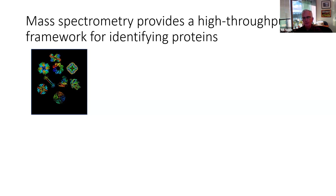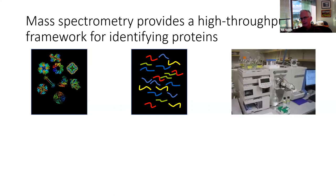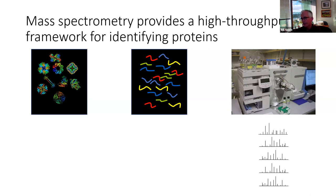Mass spectrometry is kind of like high-throughput sequencing. In genomics, high-throughput sequencing is a platform technology enabling many different kinds of experiments, and mass spectrometry does that for proteomics. Proteins are large, complicated molecules that are difficult to handle in a high-throughput fashion because they all have different chemical properties. So in mass spectrometry, the experiment begins by digesting each protein into pieces called peptides, and it's those peptides that get analyzed by the mass spectrometer, producing about 10 to 20 mass spectra per second.